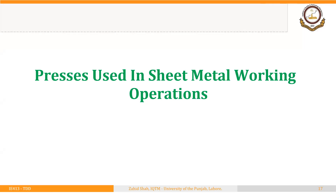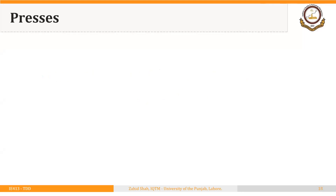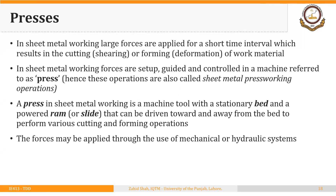Welcome back. In this segment we will discuss presses used in sheet metal working operations. The machine tool used in sheet metal working operations is a press. Large forces are applied for a short time interval, which results in the cutting or forming of the work material. These forces are set up, guided, and controlled in a machine referred to as a press.